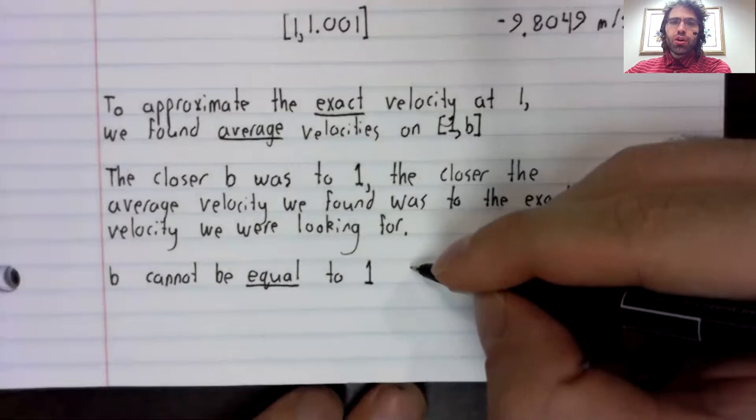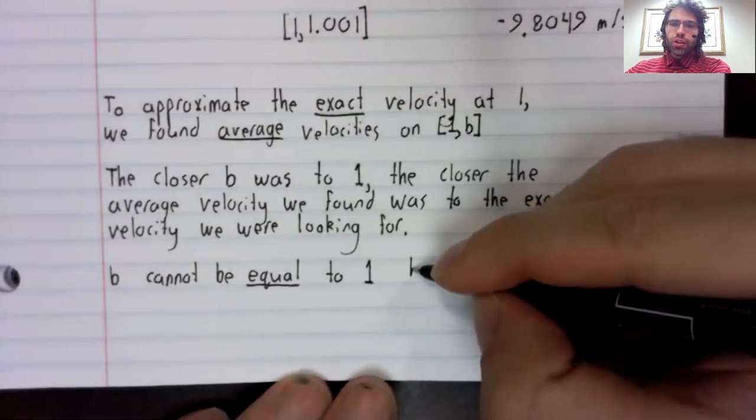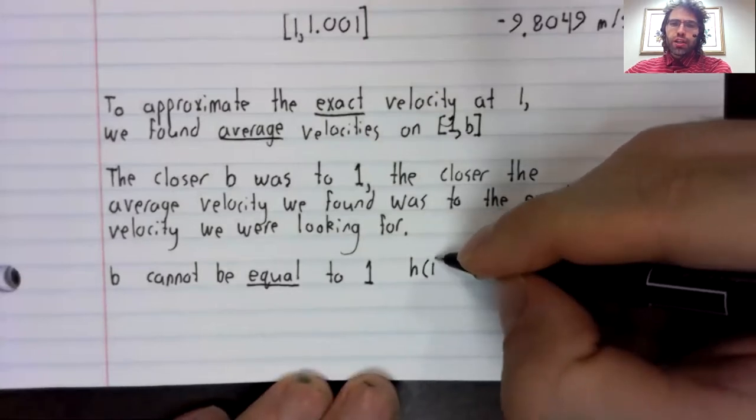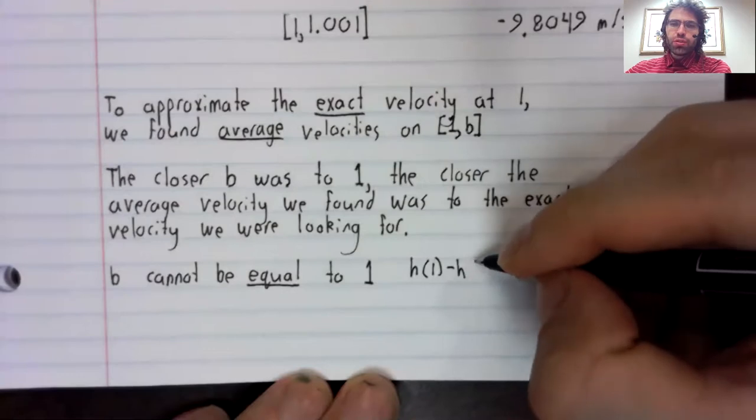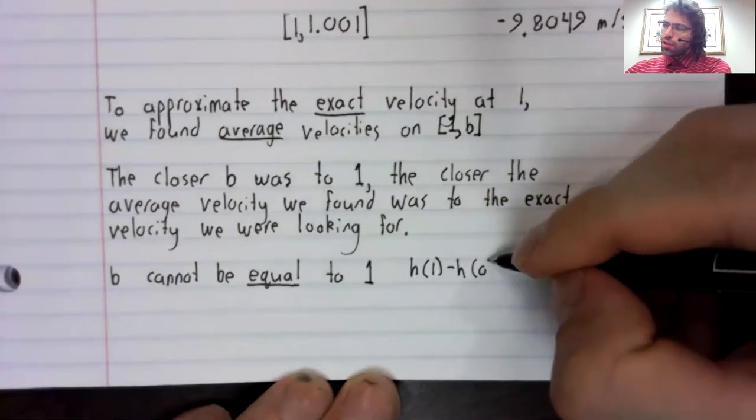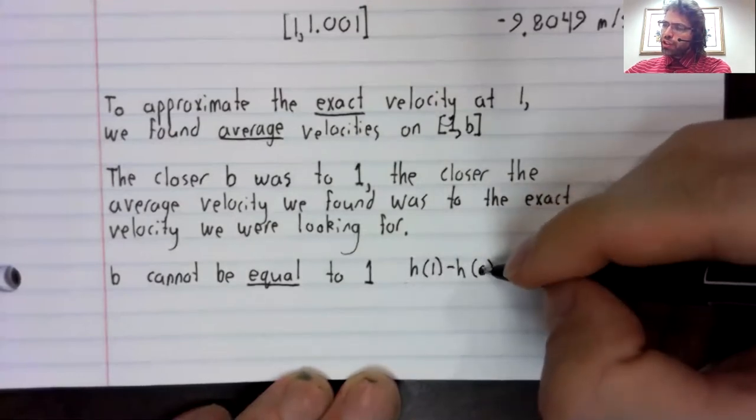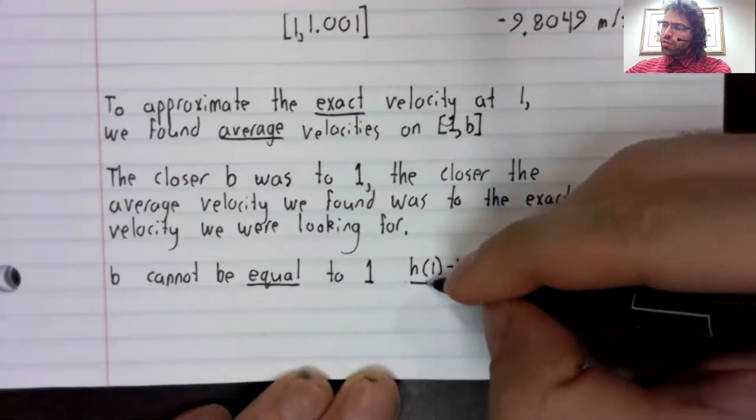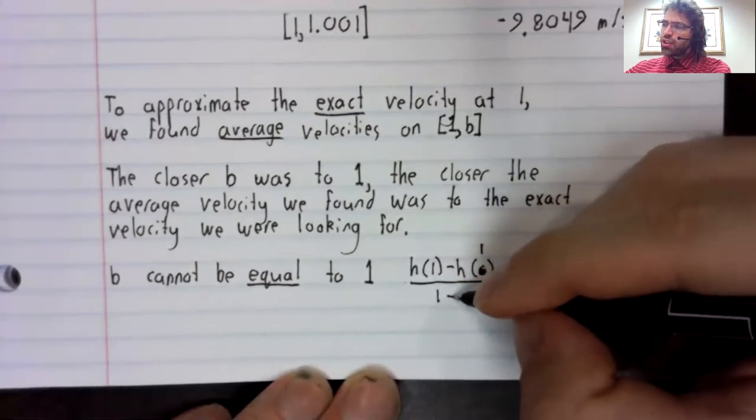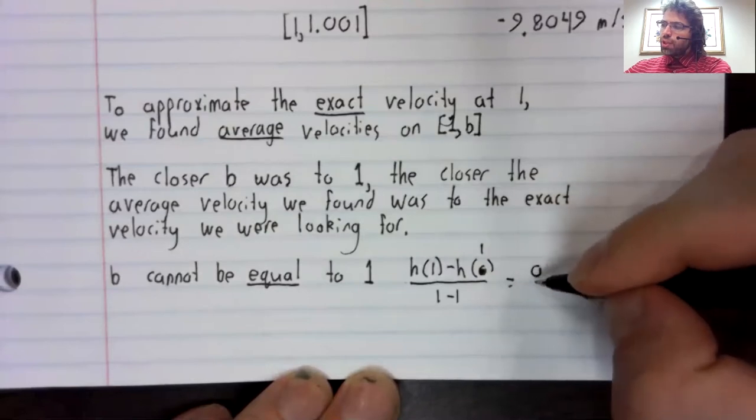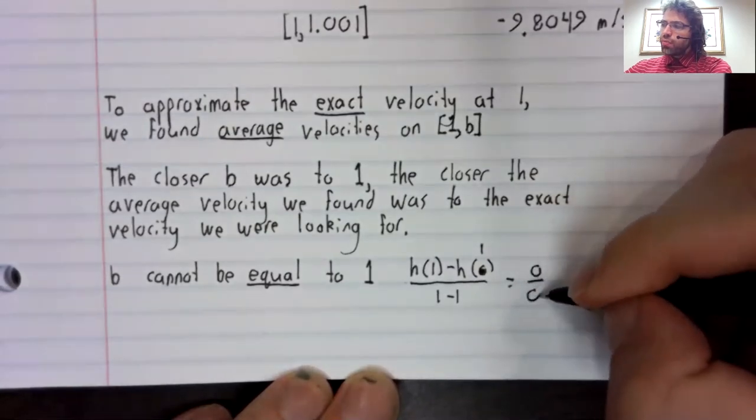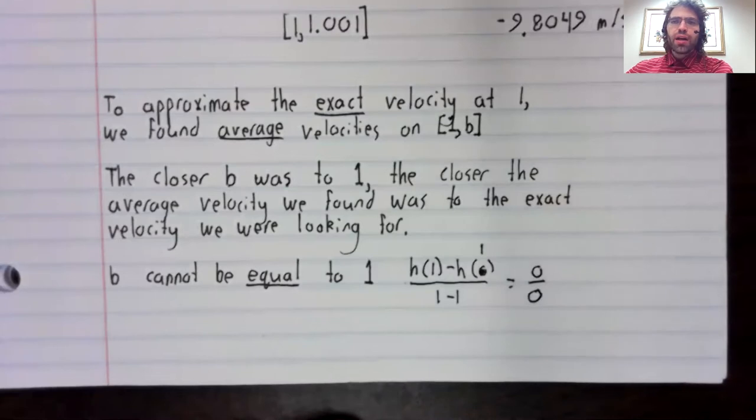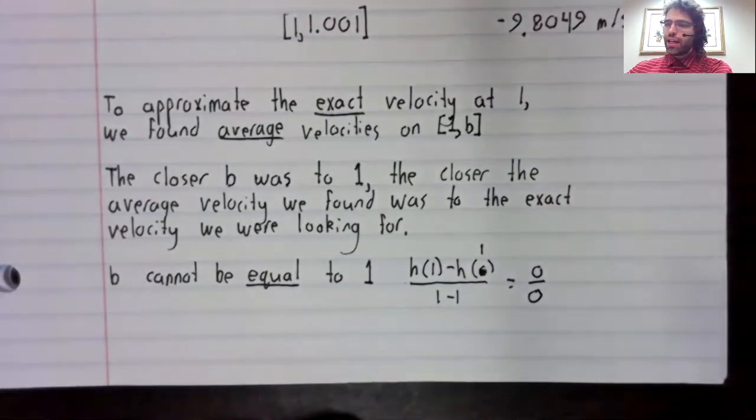If B equaled one, and we tried to compute the average velocity, we'd get a division by zero error.